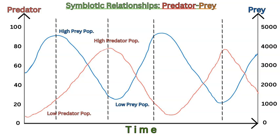Along the x-axis, we have time, as this relationship unfolds between the predator and the prey. The blue line shows the prey and the red line shows the predator. You see this opposite balance unfold where you initially have a high amount of prey, and consequently an increasing amount of predators — the predator starts at a low number.